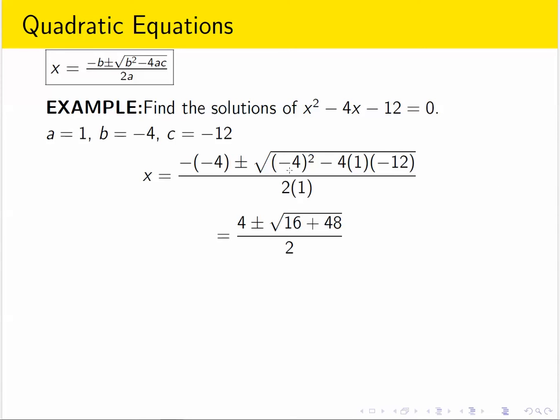So then you simplify. Negative 4 squared is 16. 4 times 12 is 48. And there are two minus signs. Negative times a negative gives you a positive. In the denominator, 2 times 1 is 2. Then you can simplify what's inside the square root. 16 plus 48 is 64.